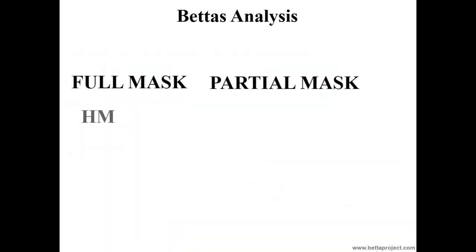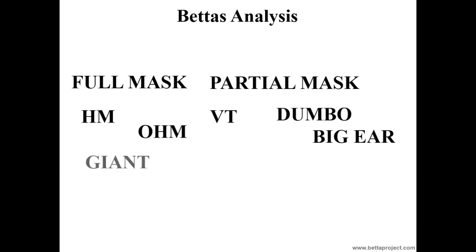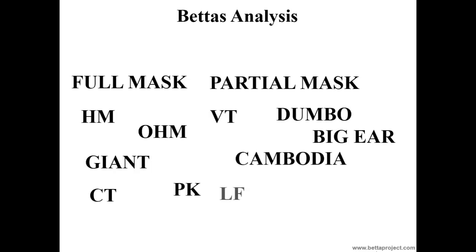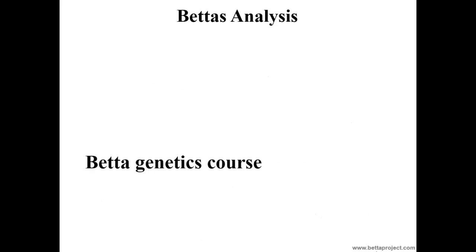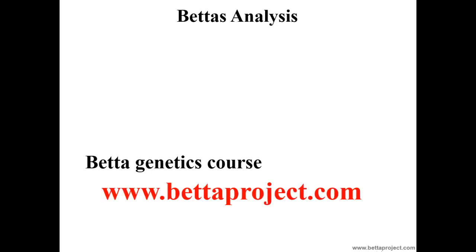Note that characteristics like full mask, partial mask, half moon, over half moon, veil tail, etc., are all determined by genetic traits that can be handled to some extent to improve lineages. In my course on BETA genetics, I explain in detail and in a continuous manner how these characteristics, and many others, behave genetically and how to manipulate them in a practical way in selecting works. Access betaproject.com for further information if desired.